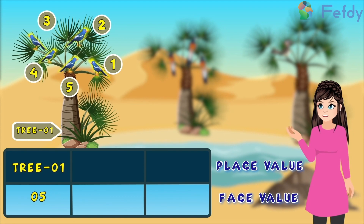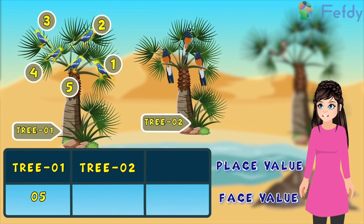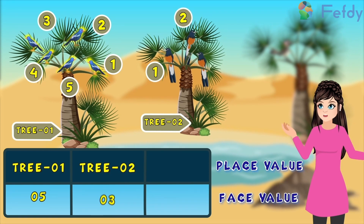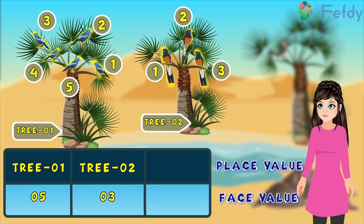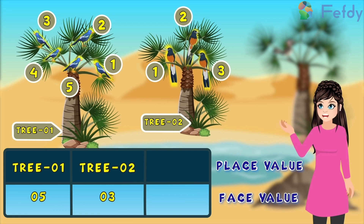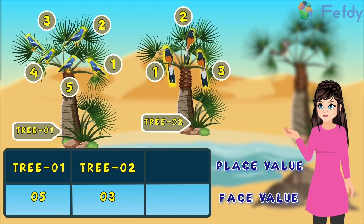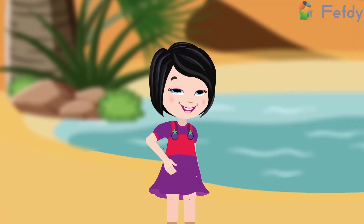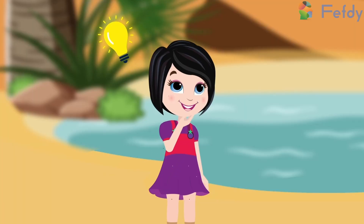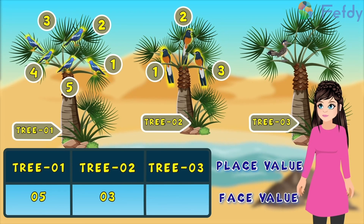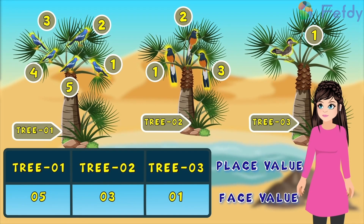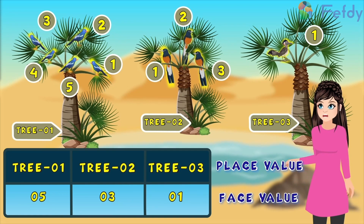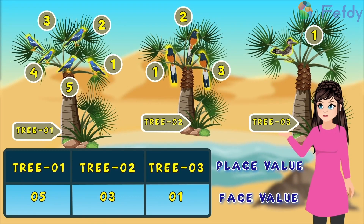Likewise, for tree two, the place value is tree two and the face value is the three sheer tails. Why don't one of you tell me what the place value and face value for the next one is? Let me guess — the place value is tree three and the face value is the one roadrunner bird. Is it correct, Auntie? Yes, Kelsey. You are so smart.